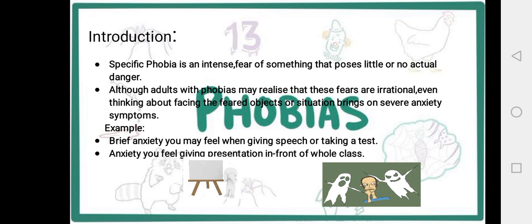Specific phobia involves something that is not as dangerous or fearful as we imagine — there is no actual danger. Although adults with phobia may realize that these fears are irrational and that the feared object or situation is not actually dangerous, they still cannot overcome it. For example, students who have anxiety about class presentations feel anxious when they go into that situation — they feel all eyes are on them and they lose their confidence.